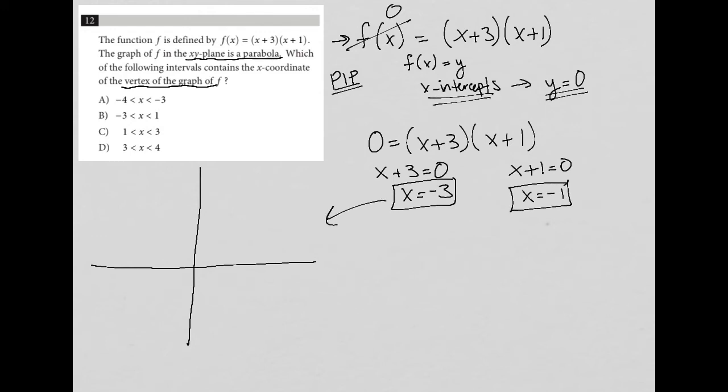Now back to the graph here. That means if I start to label my graph on the x-axis, I have -1 and -2 and -3. And I know that my intercepts are here at -3 and here at -1.